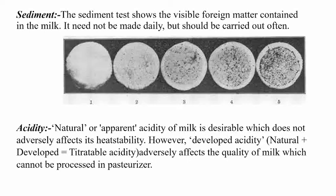Acidity of the milk is assessed to check that it does not adversely affect food stability. We can know how long the milk has been kept by checking its acidity. Natural acidity plus developed acidity equals titratable acidity. As the duration of storage increases, acidity will increase. We test acidity to determine how long the milk has been kept at high temperature.